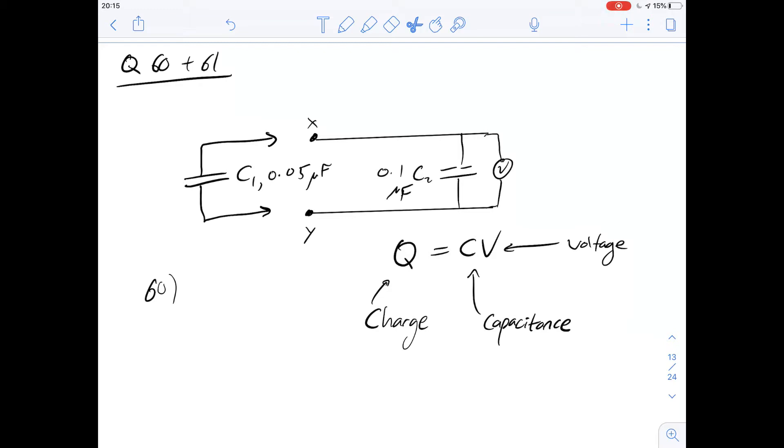So we've got a diagram here in figure 1, which I've copied out. We've got two capacitors here. Question 60 says after being fully charged and before the two parts were joined, C1 carried what charge?